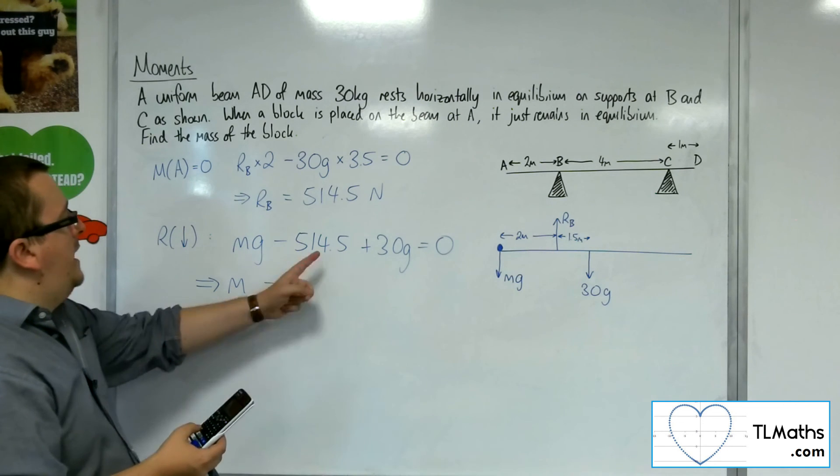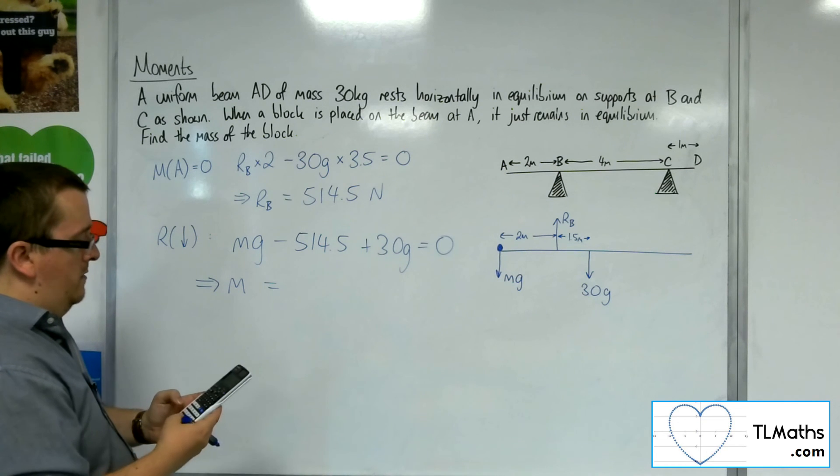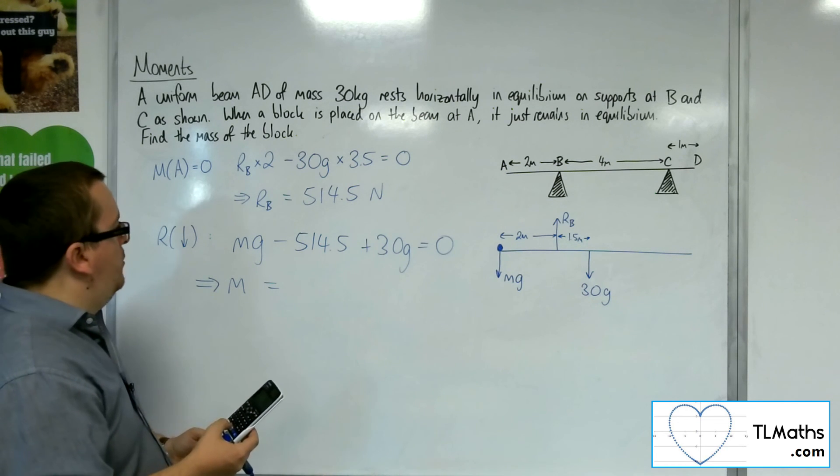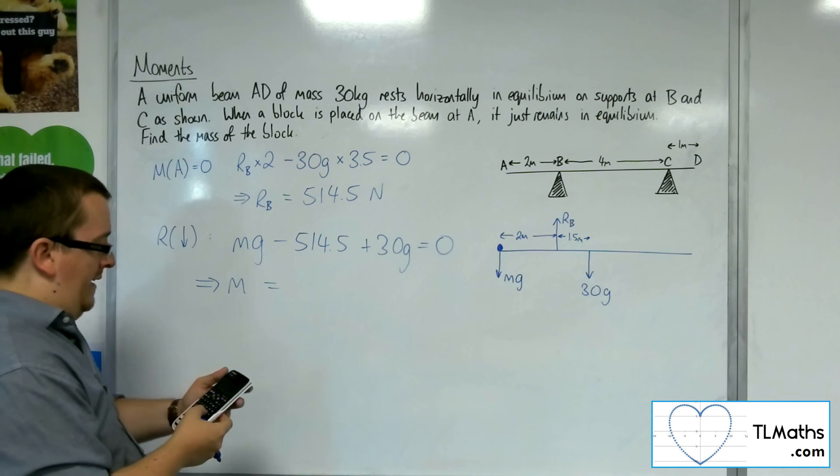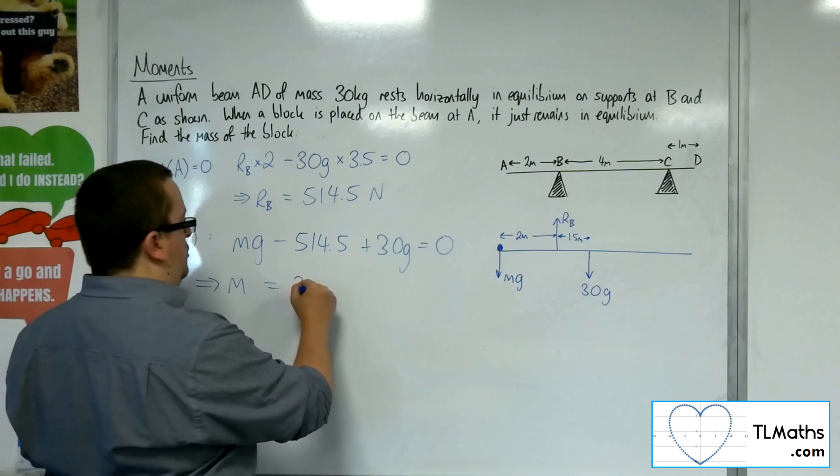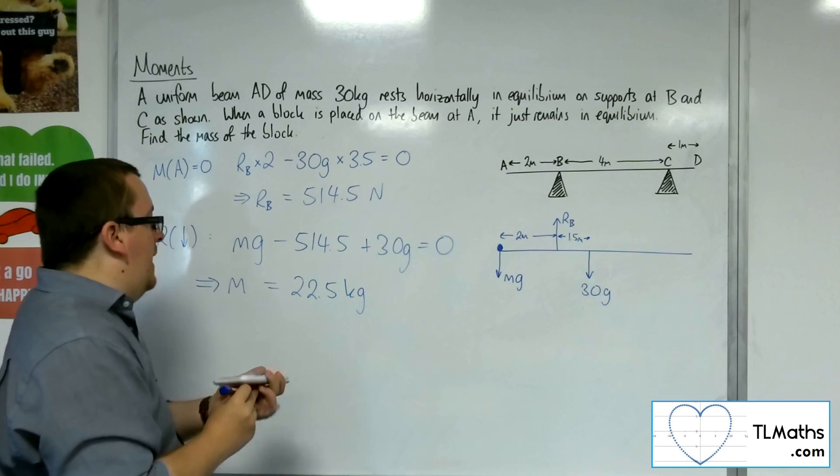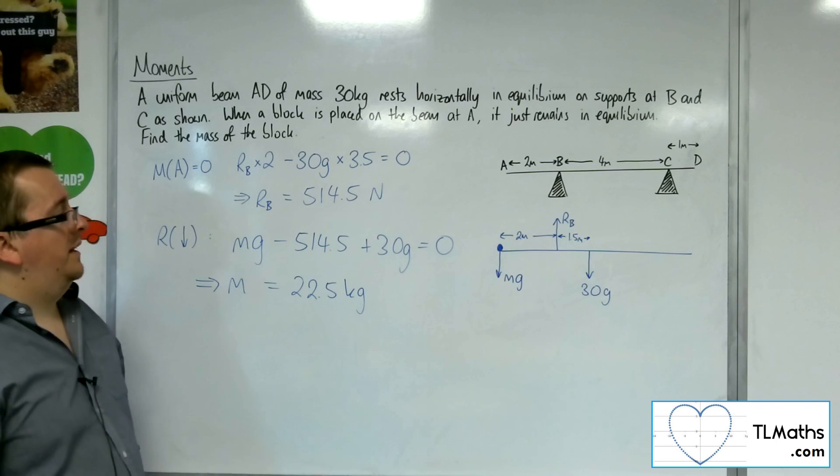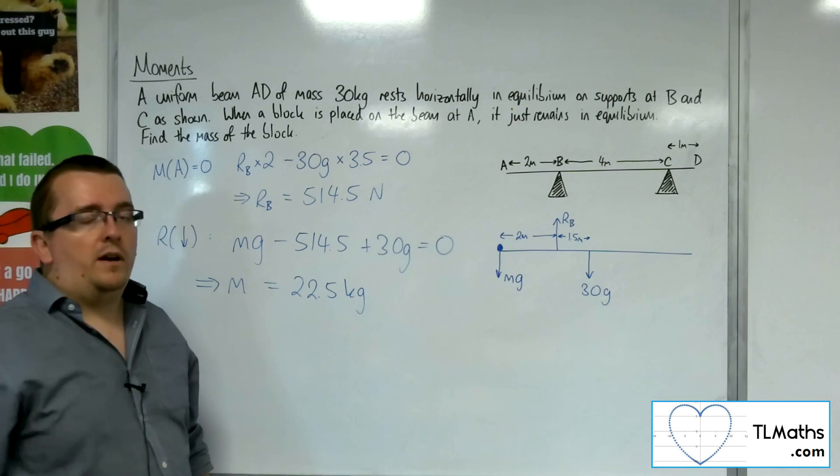So if I add the 514.5 to the other side, take away 30 lots of g, that gets me 220.5. Then divide by g, so divide by 9.8, and I get 22.5 kilos. So the mass of the particle at A, in order to keep it just in equilibrium, would be 22 and a half kilos.